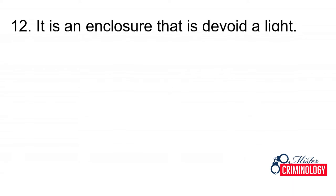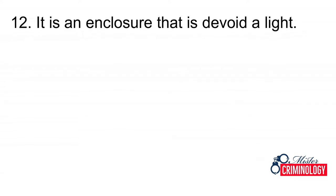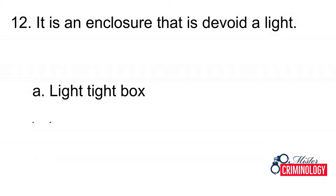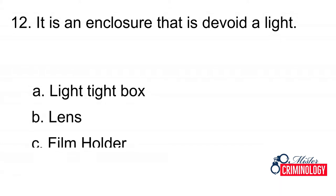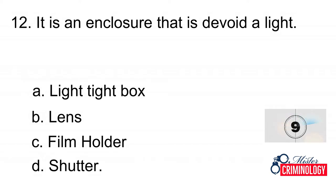Question 12: It is an enclosure that is devoid of light. A. Light tight box, B. Lens, C. Film holder, D. Shutter. Answer: A. Light tight box.